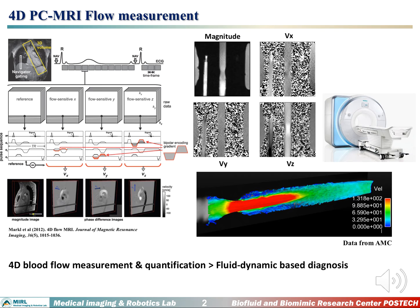PC MRI, Phase Contrast MRI, measures flow by estimating the phase difference between a reference image without bipolar gradient and flow-sensitive images with bipolar gradient. While the reference image has no phase shift by the flow, the flow-sensitive images have velocity-dependent phase shifts. By calculating the net phase shift, we can measure the temporal variation of three-directional flow fields.